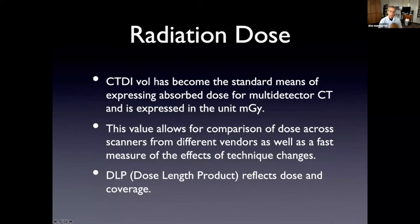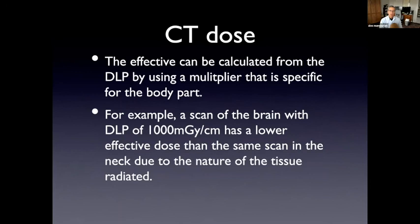The DLP is reflection of the dose, which we get from the CTDI volume and the coverage. So the DLP is going to be larger for, let's say a CTA that covers the head and neck, then it's going to be for a head scan. So the CT dose, these effective doses calculated by using a multiplier that's specific. So for a scan of the brain with the DLP of a thousand, which is pretty standard for a head CT scan, this has a lower effective dose than the same scan in the neck. And this has to do with the tissue radiated. So the effective dose is a calculation based on the applied radiation, but it will vary for the body part.